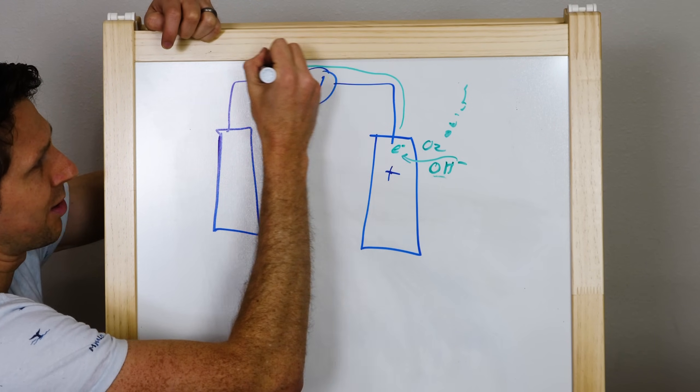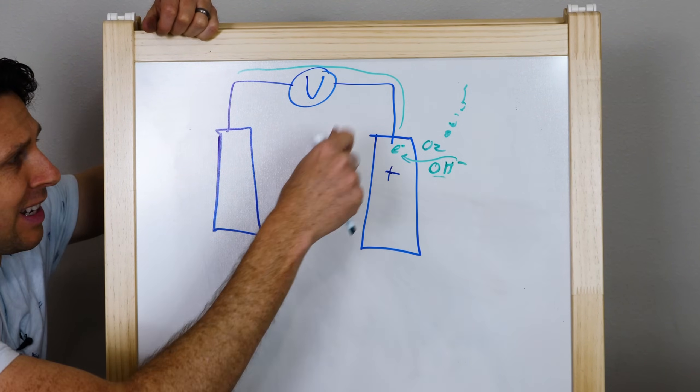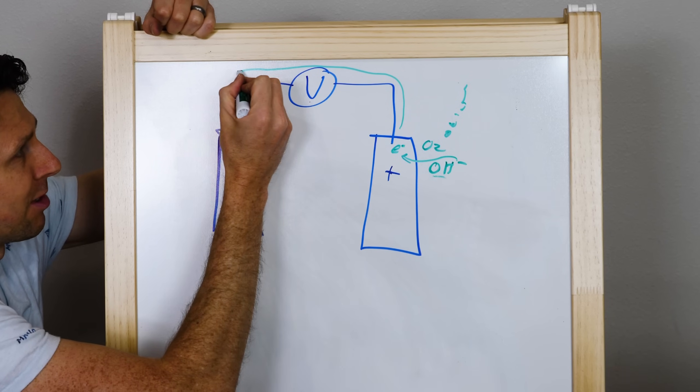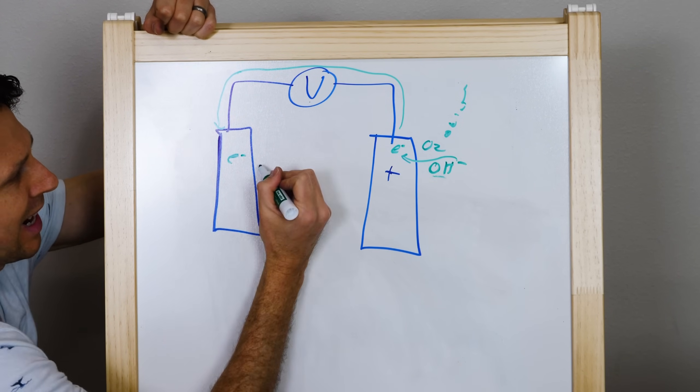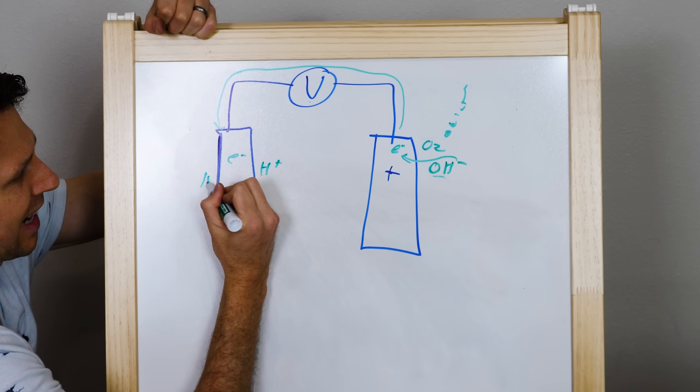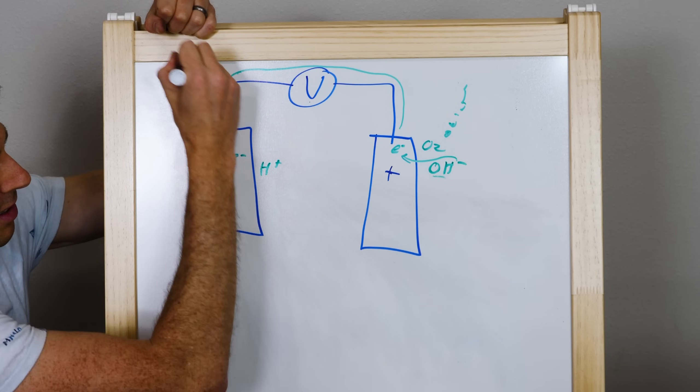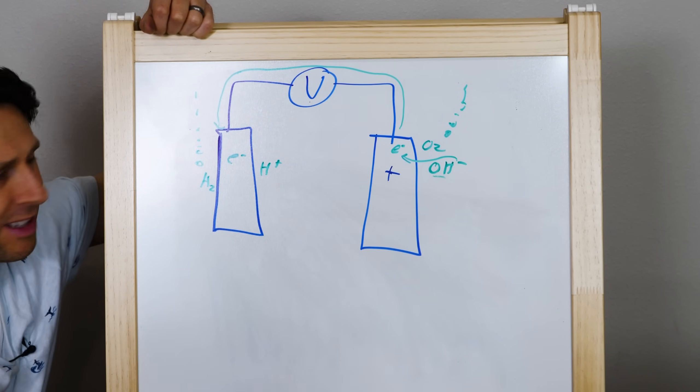And so these electrons that came from these hydroxide ions, then are going to get pushed through here. And the work that's doing that, that's doing that pushing is going to come from me. I'm going to push these electrons to the other side here, and that's where they can react with the hydrogen ions and they can become hydrogen gas, which then bubbles out of solution.